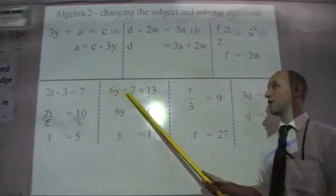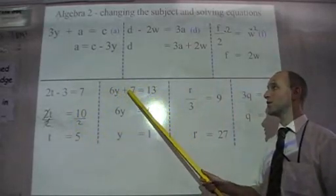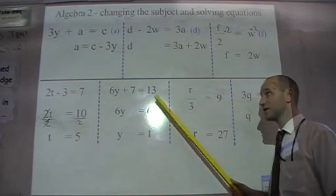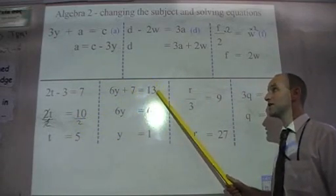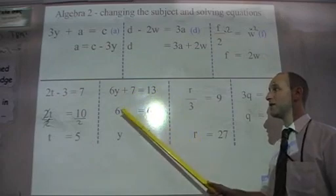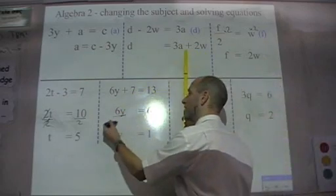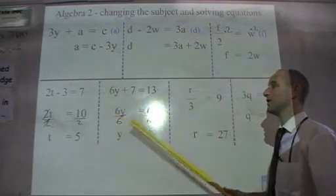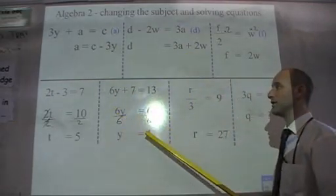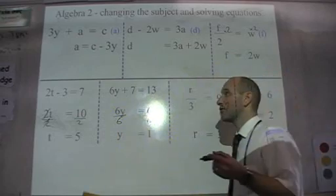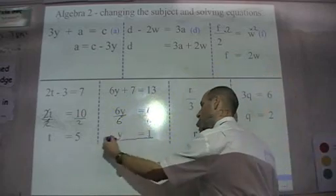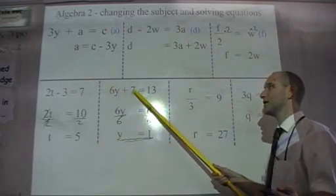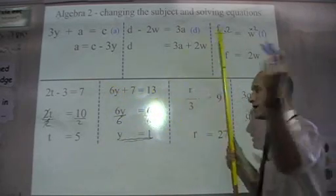Here, 6Y plus 7 is 13. I take away 7 from both sides, leaving me 6Y equals 6. If I divide this side by 6, and this side by 6, 6 divided by 6 is 1, so I get Y equals 1. If I want to check if I'm correct or not, I can substitute my solution back into my equation. 6 times 1 is 6, plus 7 is 13. Yay!